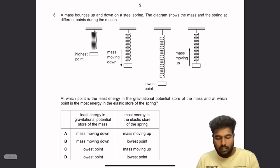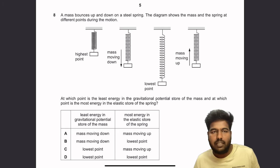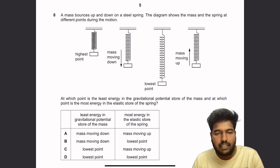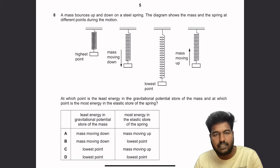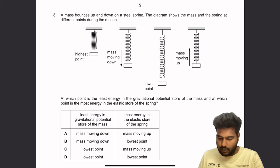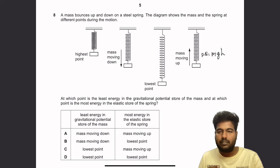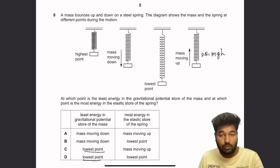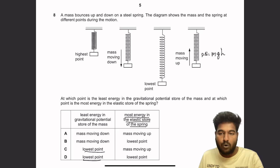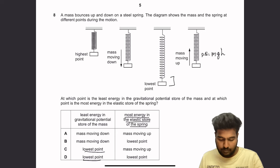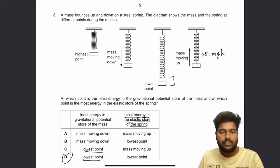Question 8: A mass bounces up and down on a steel spring. At which point is the gravitational potential energy least, and at which point is the elastic store greatest? GPE = mgh, so it is least at the lowest point. The elastic store is greatest where the spring is stretched most — also at the lowest point. So D is the right answer for both.